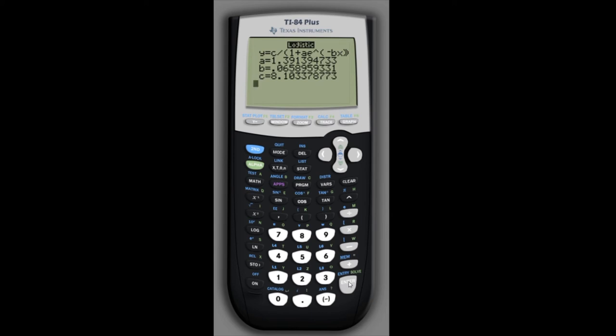Instead of y we'll use p sub t. So we'll write p sub t equals and then on top of this fraction we'll have c which is 8.1 divided by, in parentheses we don't need those parentheses though, 1 plus a that's 1.39